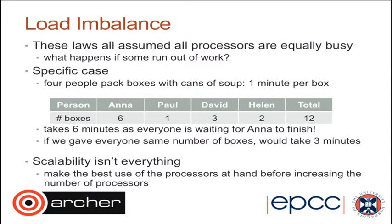With four people — Anna, Paul, David and Heather — but distributing the boxes unevenly (Anna gets 6, Paul 1, David 3, Heather 2), everyone has to wait for Anna to finish her 6 boxes. So it takes 6 minutes total. If instead we gave everyone 3 boxes each (12 divided by 4), everyone would finish in 3 minutes. In that case the load is balanced — each person is doing the same amount of work.